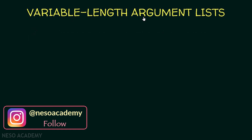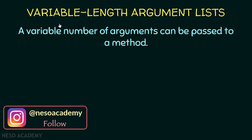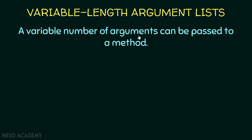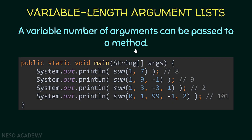What do we mean by a variable length argument list? Basically, a variable number of arguments can be passed to a method. In the main method, I'm printing the return value of a method called sum. Here I'm passing two arguments, and this method will return the sum of these two arguments — in this case, eight will be printed. After that, I'm passing three arguments, then four, then five. You can pass as many arguments as you want, so the method sum can take a variable number of arguments. This is a variable length argument list in action.